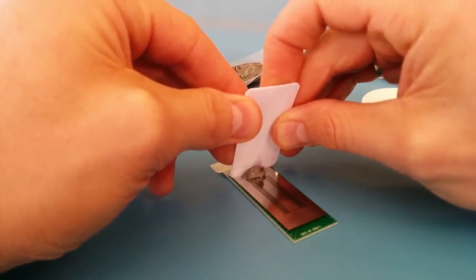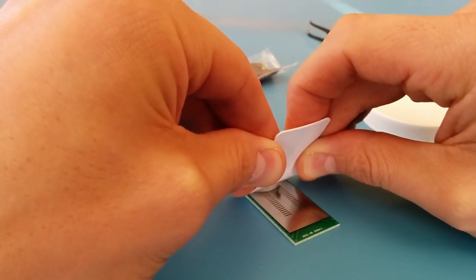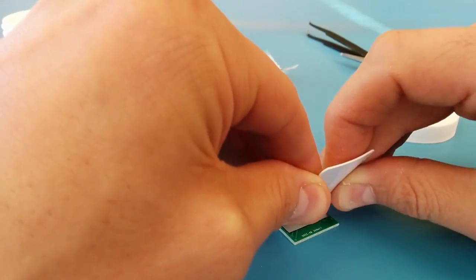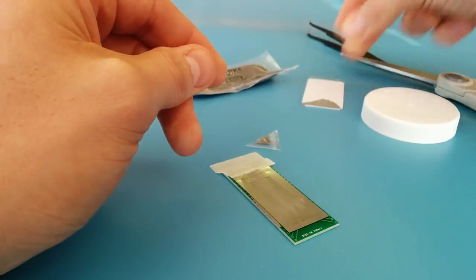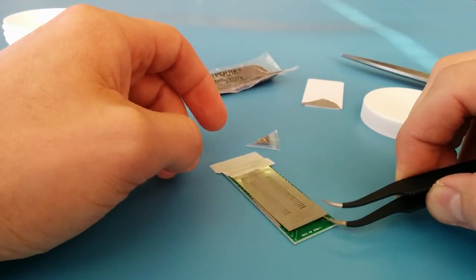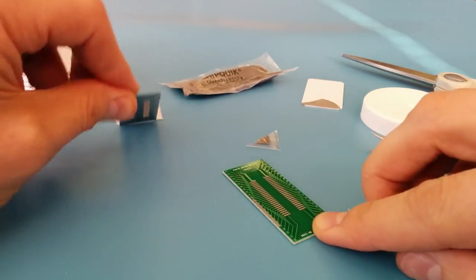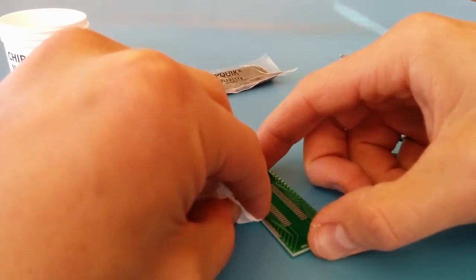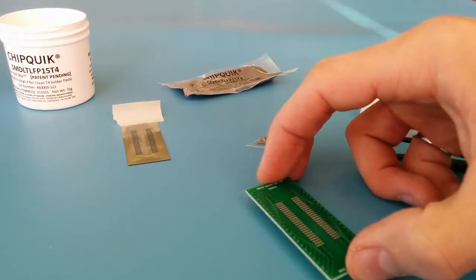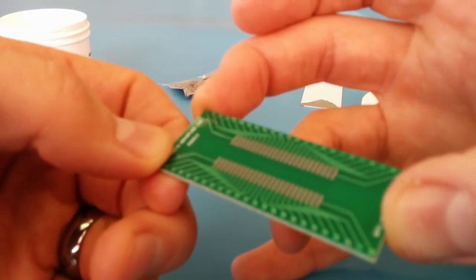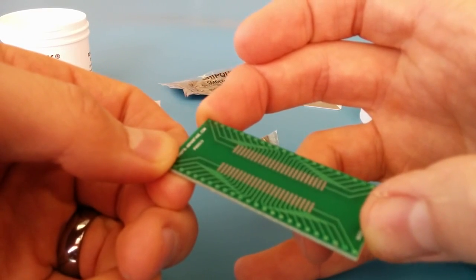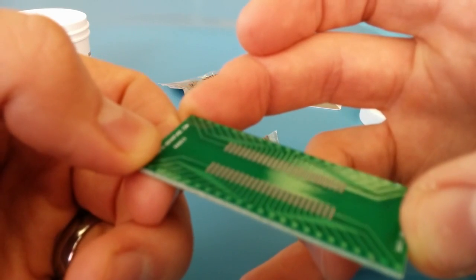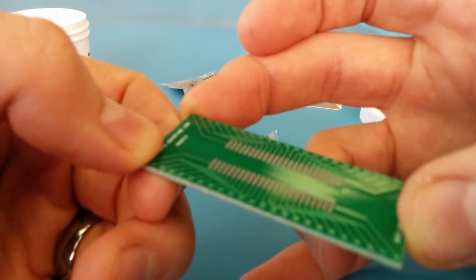Then perform your squeegee operation. Lift your squeegee off. If you've got any extra paste on the side, just wipe it away. And there you go. Paste that is as fresh as it was made in the factory that day.